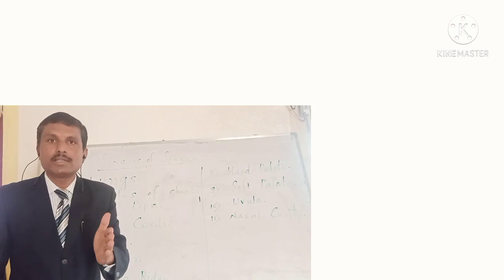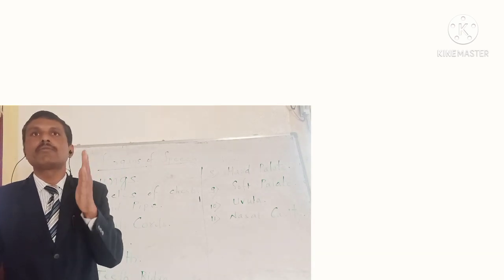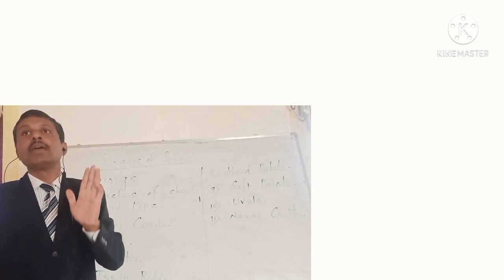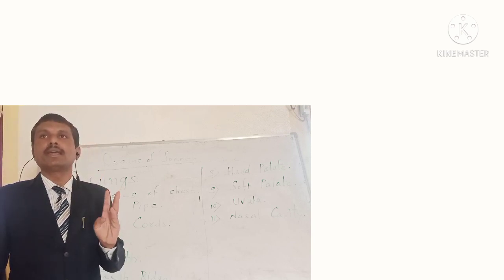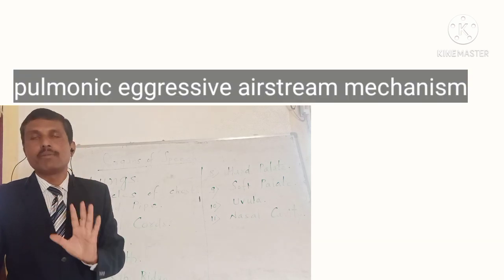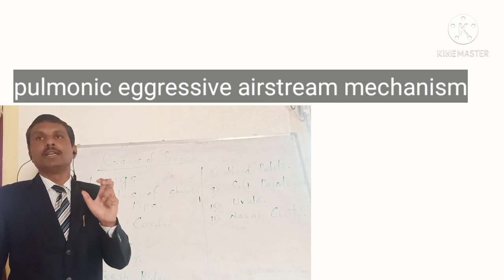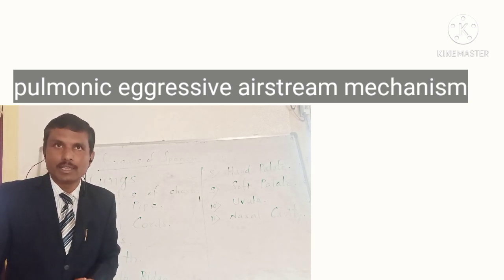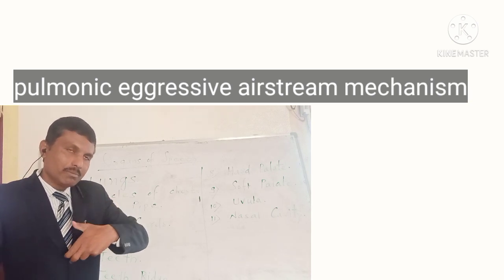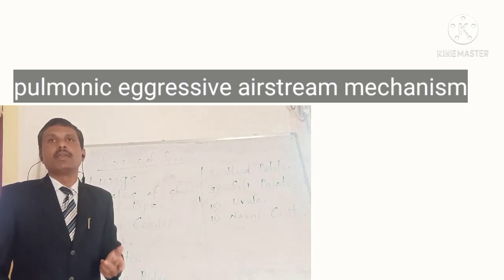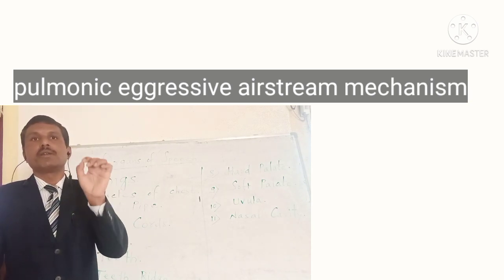We have to remember: the respiratory system is the system that provides the air stream required for the production of speech sounds. This air stream is known as the pulmonic egressive air stream, and this mechanism is called the pulmonic egressive air stream mechanism. It's called pulmonic because it initiates from the lungs, and egressive because it is air that comes out from the lungs.